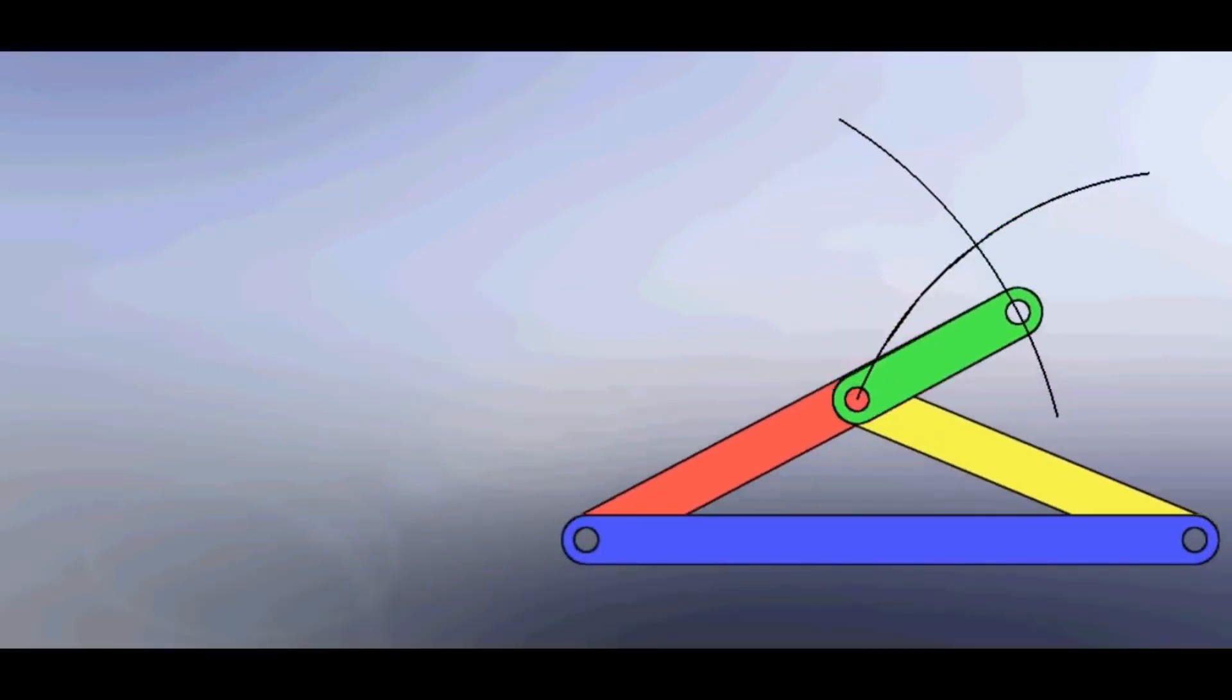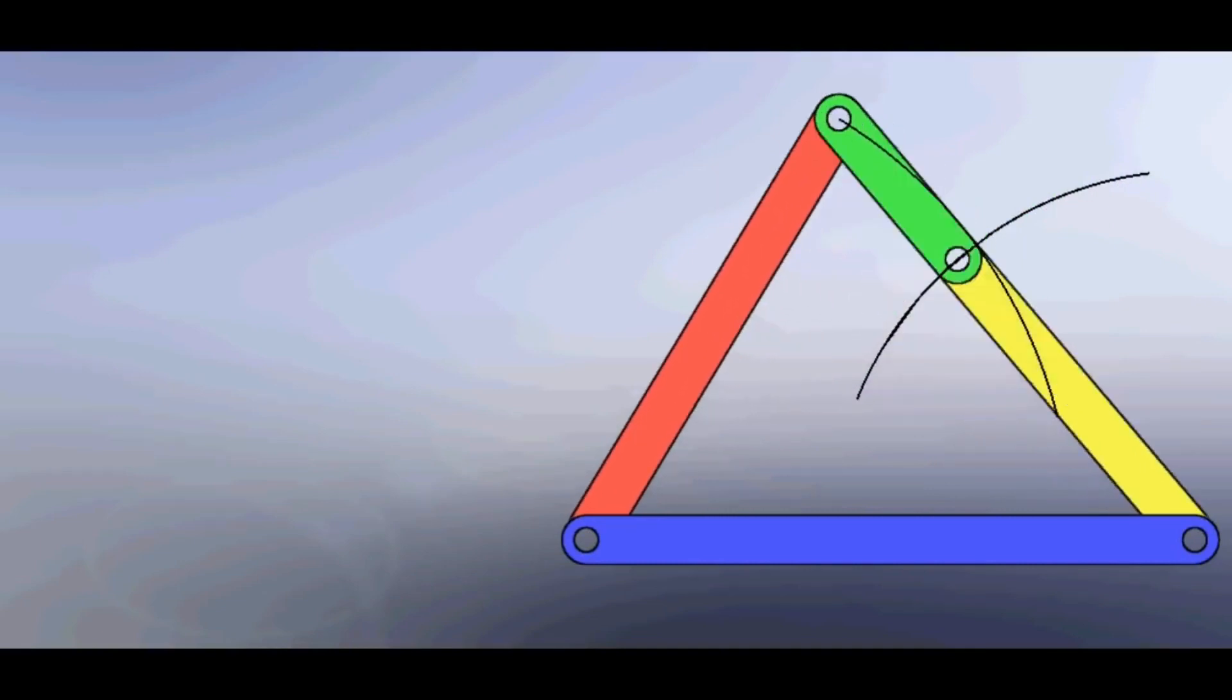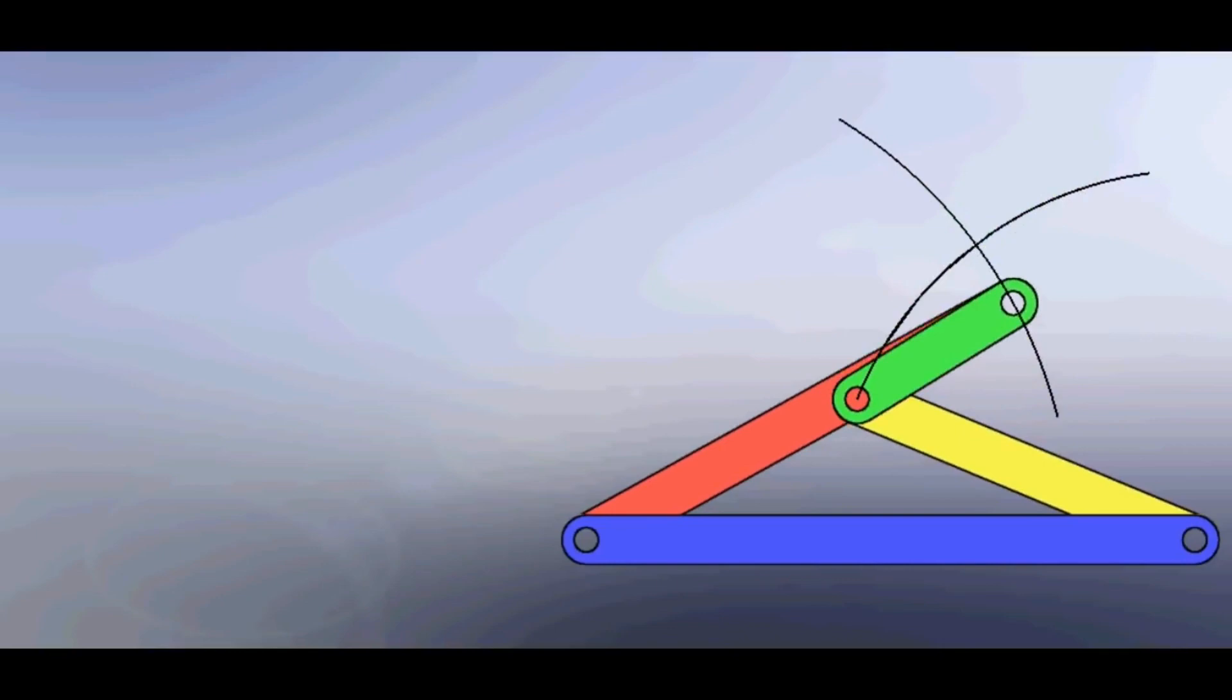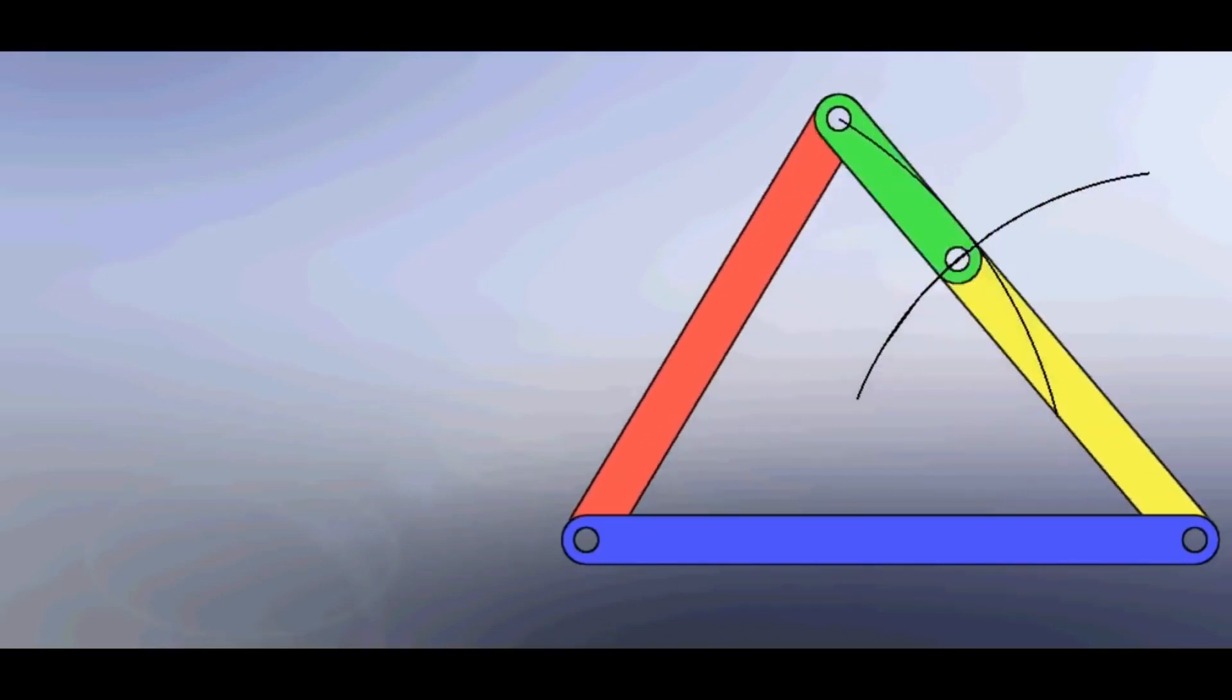making a complete revolution with respect to the ground link while the two arms are oscillating. That's why this mechanism is known as double rocker mechanism. Now also watch these videos: what is triple rocker mechanism, what are its inversions,